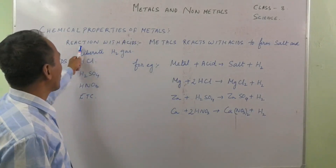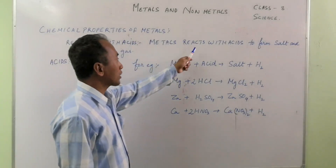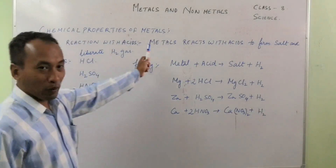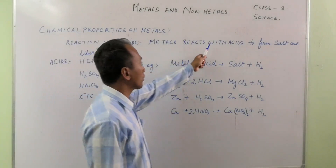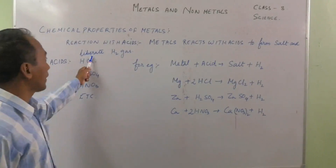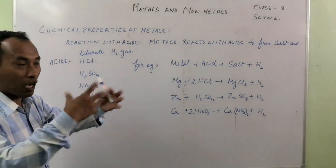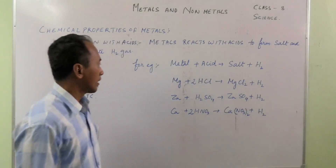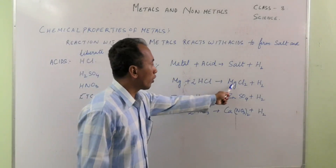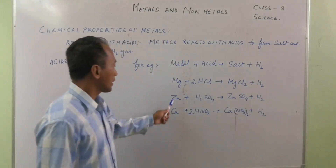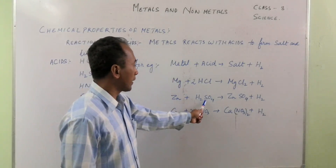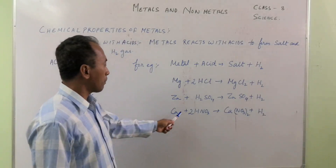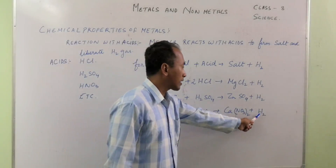The second chemical property of metals is reaction with acid. Metal reacts with acid to form salt and liberate hydrogen gas — 'liberate' meaning to give out. For example: metal + acid → salt + hydrogen gas. Magnesium reacts with hydrochloric acid to form magnesium chloride salt and hydrogen gas. Zinc plus sulfuric acid (H₂SO₄) gives zinc sulfate plus hydrogen gas. Calcium plus nitric acid gives calcium nitrate plus hydrogen gas.